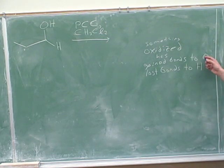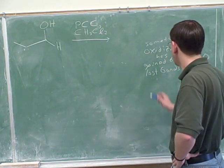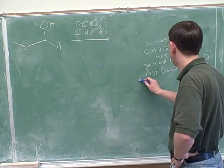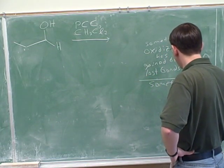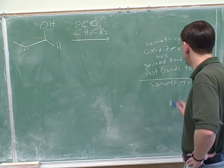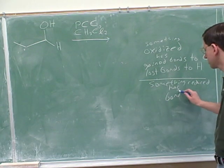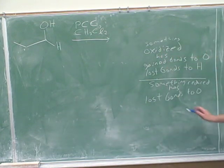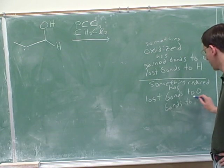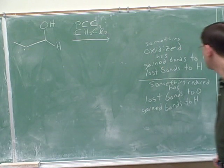So gained bonds to oxygen and or lost bonds to hydrogen. Actually, the oxygen actually could be any electronegative atom, oxygen or any other electronegative atom. But in this course, you're mainly going to focus on oxygen. Okay. So then, something reduced, has that gained or lost bonds to oxygen? Right. And how about hydrogen? Gained bonds. Okay. Good.